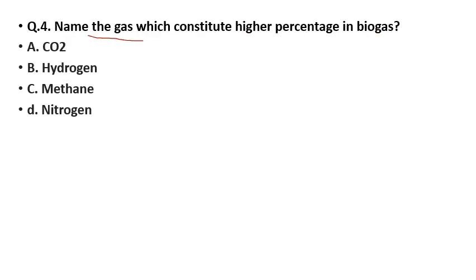Next question: Name the gas which constitutes the highest percentage of biogas. Biogas mein sabse high percentage kiska hota hai? The options are CO2, hydrogen, methane, or nitrogen. Methane has the most percentage — approximately 75%. Therefore, the correct answer for question number 4 is option C.